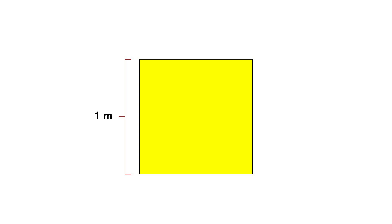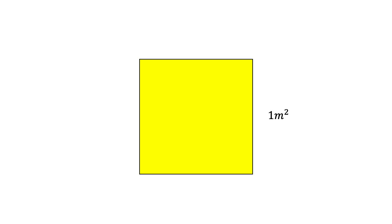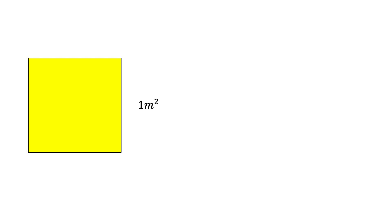Vamos a ver un ejemplo parecido para entender el concepto de los límites. Tenemos un cuadrado cuyo lado mide un metro, por lo que el área es lado por lado: un metro por un metro, es decir, un metro cuadrado.